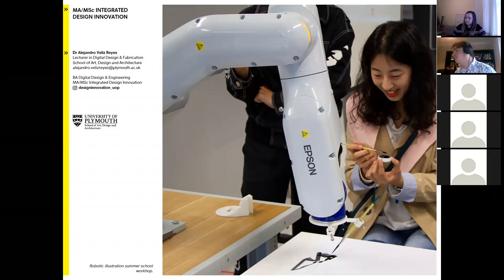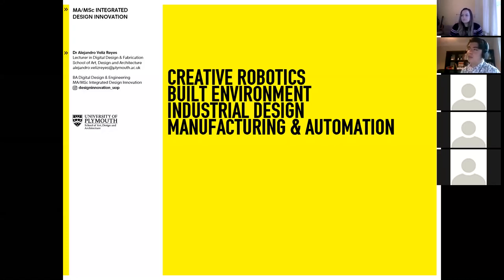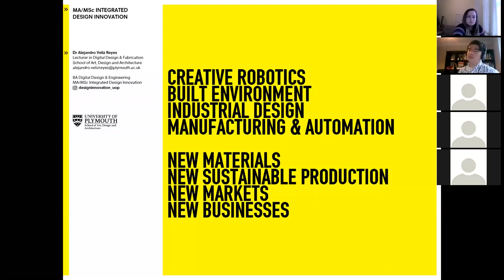The areas we work on include creative robotics, built environment, industrial design, manufacturing, and automation. One project looks into the Fab City agenda — how digital fabrication can engage with broader cities and communities. We're also looking at innovation: new materials, new modes of sustainable production, new markets, and new business models for the creative sector and the creative use of digital technologies.